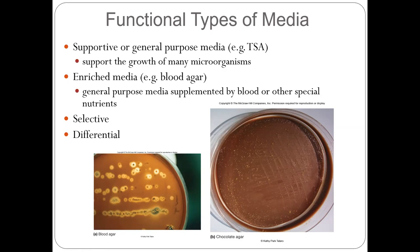For example, blood agar is an enriched media — no problem, because of the 5% sheep blood. But when you see the colony, you see a transparent zone and some greenish color. This is also a differentiated media. The transparent zone we call beta hemolytic — complete lysis of blood cells. The greenish color we say is alpha hemolytic, which means incomplete hydrolysis of blood cells.